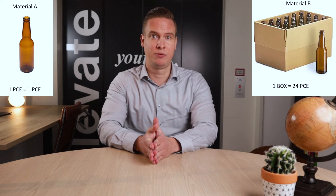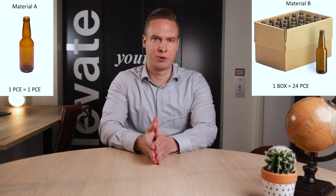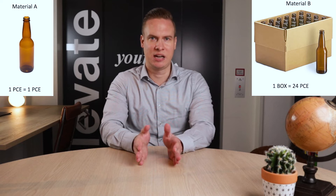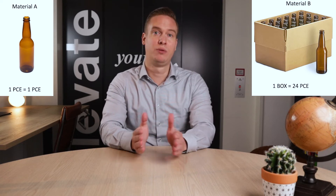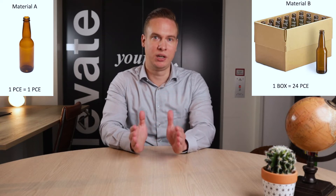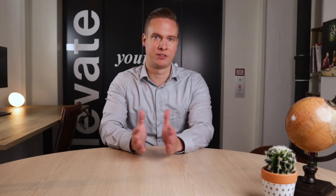In our example, the customer uses material number A for the unpacked product and material B for the packed product. For both SKUs, the core product is the same. The question arises how to prioritize business-to-business customers over business-to-consumer customers when dealing with two different material numbers that use the same core product.